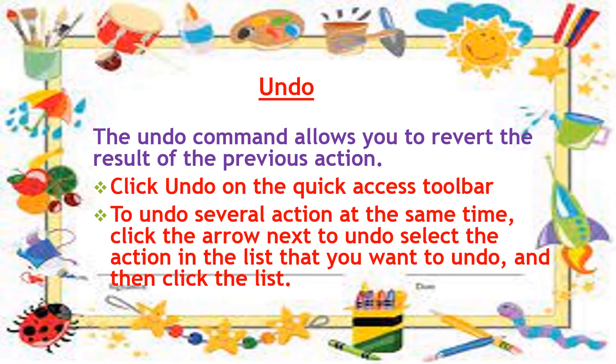What do we do to undo several actions at the same time? Click the arrow next to the Undo button. Select the action in the list that you want to undo, and then click the list.